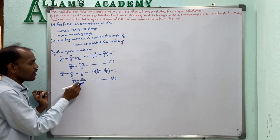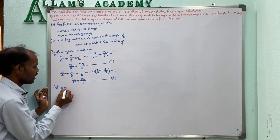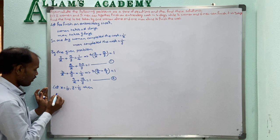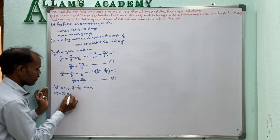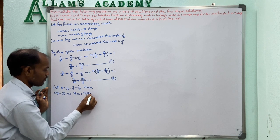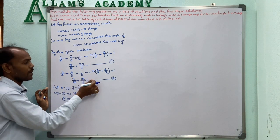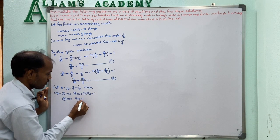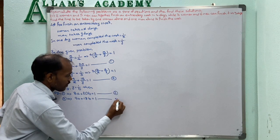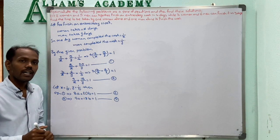Both equations have denominators X and Y. Let 1/X equal A and 1/Y equal B. Then equation 1 becomes 8A plus 20B equals 1, and equation 2 becomes 9A plus 18B equals 1. These are equations 3 and 4.